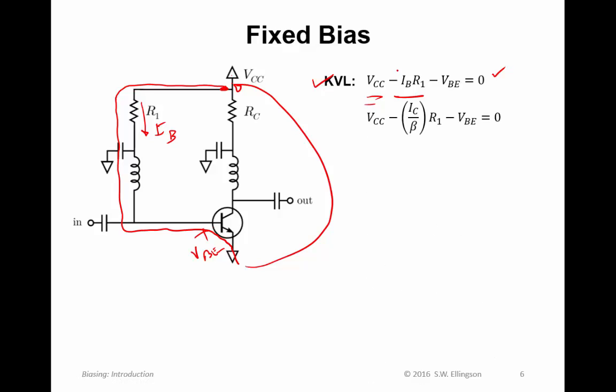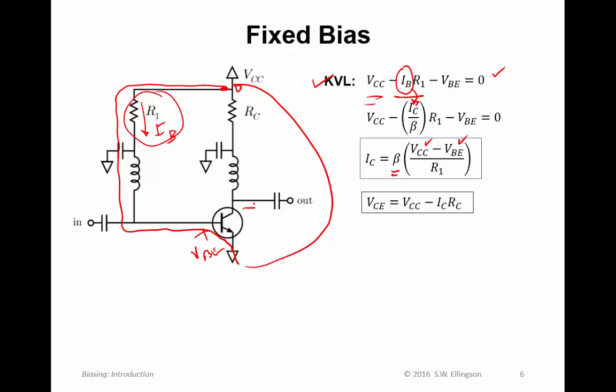If we substitute the relationship for bipolar transistor that relates base current to collector current, then we can solve for the collector current. So we find the collector current is given by beta times the difference between VCC and VBE divided by R1, the resistor in the base bias path. We can also quickly find that the collector emitter voltage is given by VCC minus I sub C, which is flowing this way, times RC, the value of that resistor. So we've completely characterized this bias circuit now.